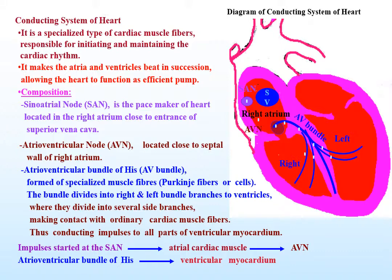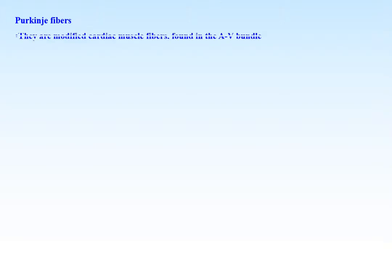Impulses start at the SA node, then travel to the atrial cardiac muscle, then to the AV node, then to the atrioventricular bundle of His, and finally to the ventricular myocardium.